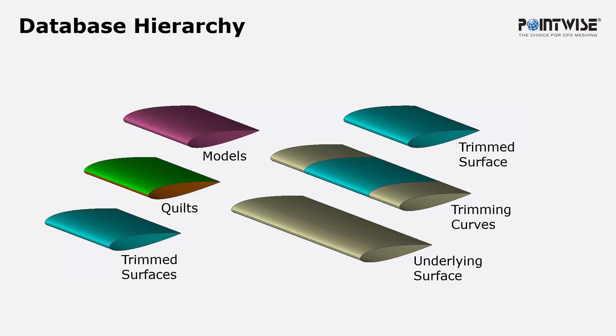Now, what we do is we promote each one of those trim surfaces to quilts and models. And a quilt is essentially a watertight representation of trim surfaces because we can actually assemble quilts into larger and larger quilts so that they can consist of multiple underlying trim surfaces.